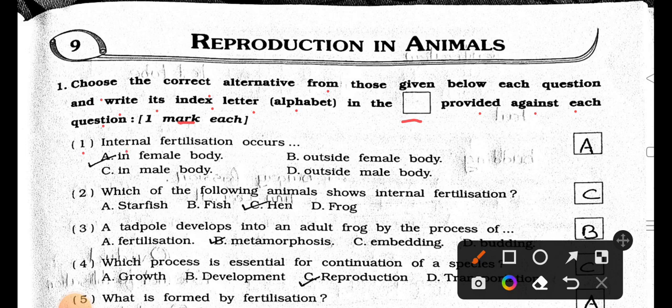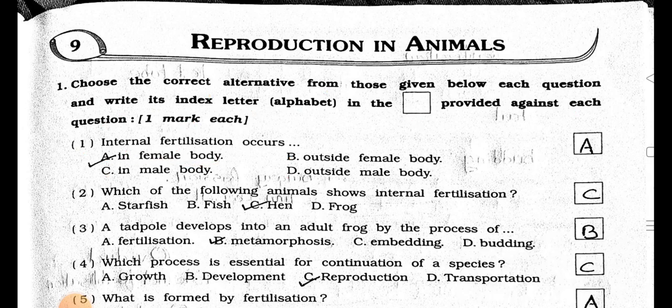Number 1. Internal fertilization occurs: A. In female body, B. Outside female body, C. In male body, and D. Outside male body. Answer is A, in female body.